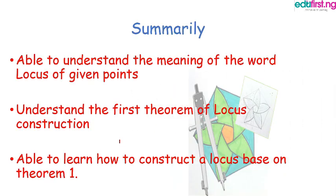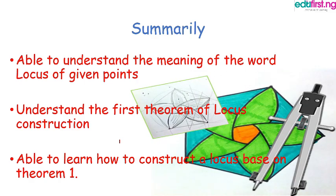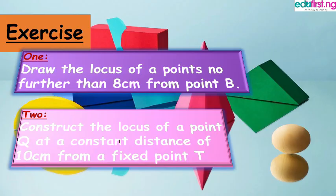At this point, we are able to understand the meaning of the word locus of a given point. We understand the first theory of locus, and we can also construct simple locus-related problems that are related to Theory 1. We can as well test our understanding to see if we really understand what we have been learning so far.